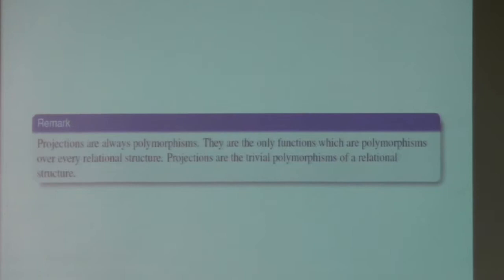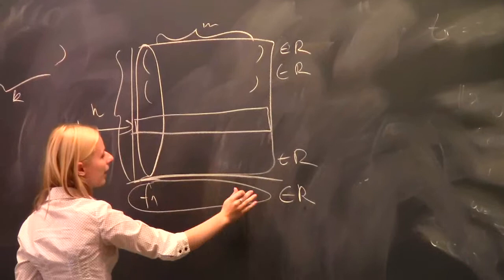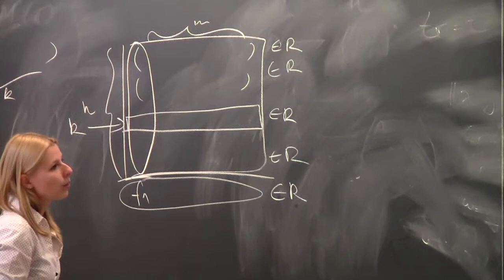For example, projections are always polymorphisms, because the k-th projection just takes the k-th element from each column — it copies one of the rows, which was already in R. So the result must be in R too. They are the only functions which are polymorphisms of every relational structure, so we call them the trivial polymorphisms.